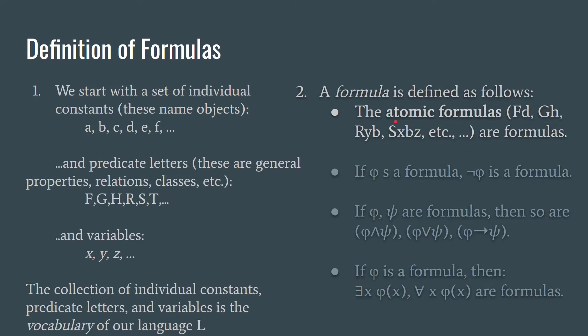Given these ingredients, we can then define formulas. An atomic formula is something like FD or GH or RYB. In all cases, an atomic formula is the combination of a constant or a variable with a predicate letter. Once we have this set of atomic formulas, we can then use the usual logical connectives. So if φ is a formula, then not φ is a formula. Anytime you have a well-formed formula, however complex, you can stick a negation in front of it and get a new formula. We're all familiar with the two-place logical connectives. We have conjunction, we have disjunction, and we have the arrow. Anytime you have a well-formed formula φ and a well-formed formula ψ, no matter how internally complex these are, you can stick a conjunction in between, you can stick a disjunction in between, or you can stick an arrow in between, and you get a new well-formed formula.